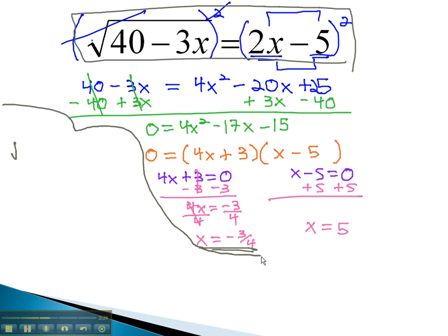Plugging it in, we get the square root of 40 minus 3x, which is negative 3 fourths, will hopefully equal 2x, which is negative 3 fourths, minus 5.